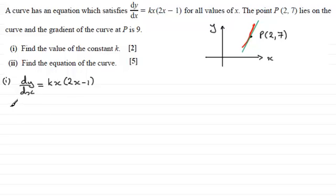So I'm going to say then that when x equals 2, we know that dy/dx equals 9. And so therefore substituting it into that equation we end up with 9 equals k times 2. And if we put 2 into this bracket, 2 times 2 is 4 minus 1 is 3. So you've got 6k equals 9.